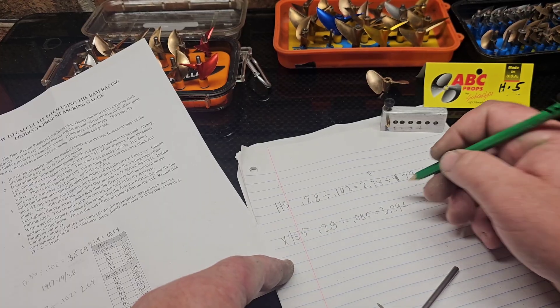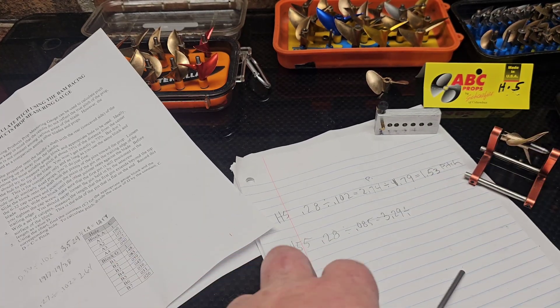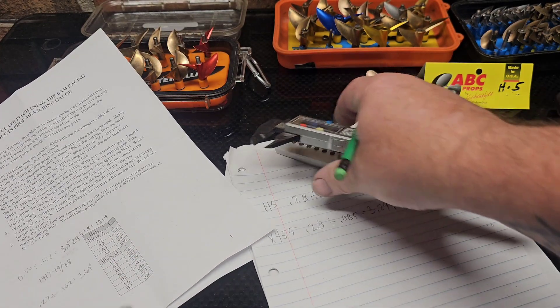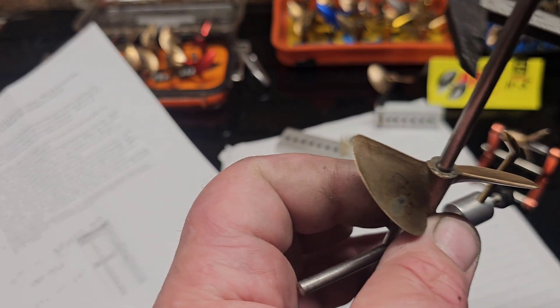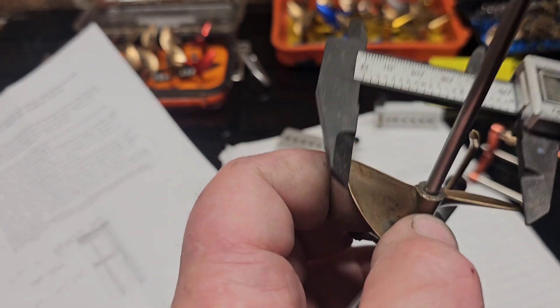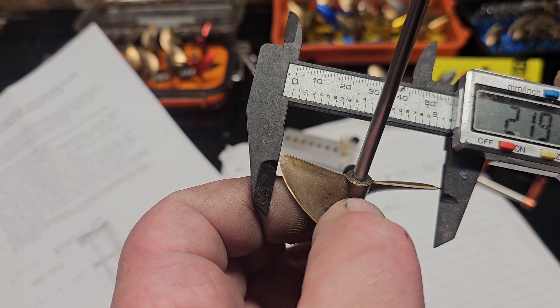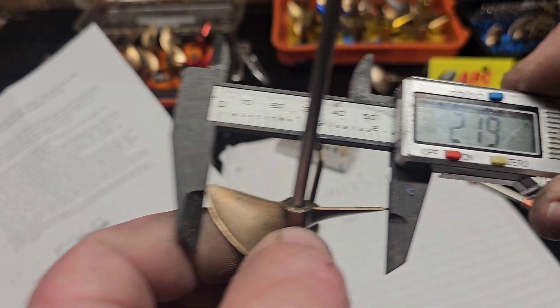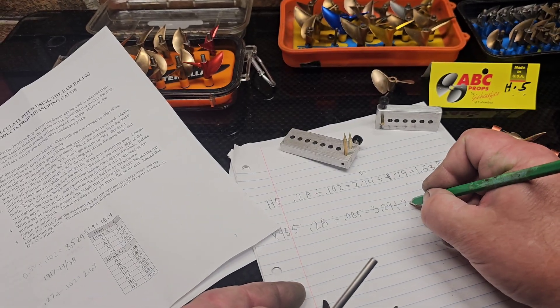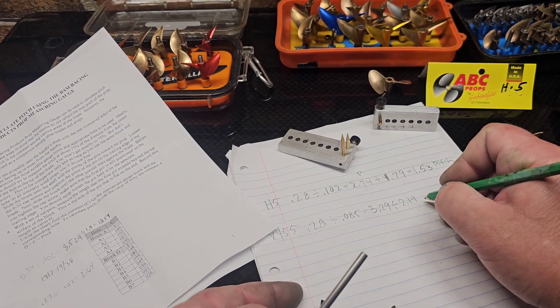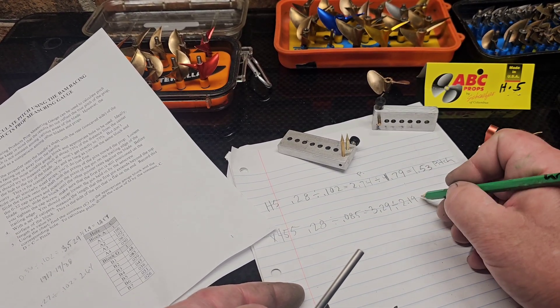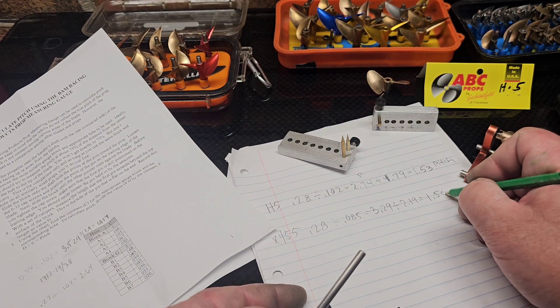3.29. Divided by, oh, you've got to be careful with those pins. You don't want to mess them up. Divided by 2.19 diameter. 2.19 diameter. Equals 1.50.